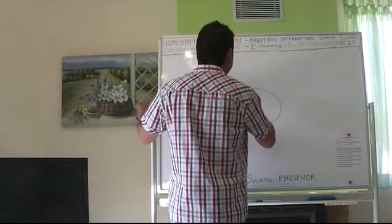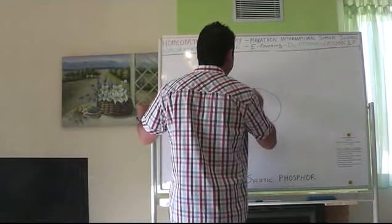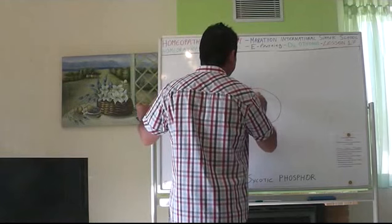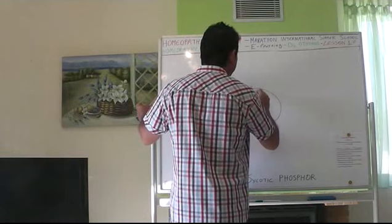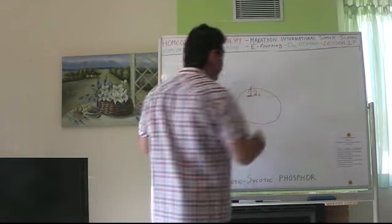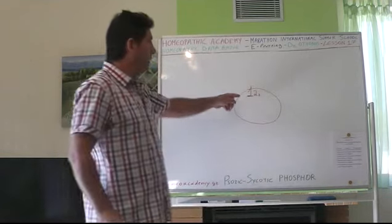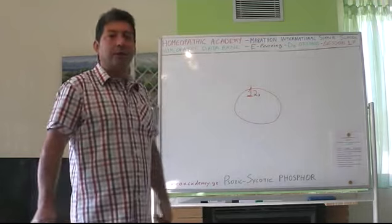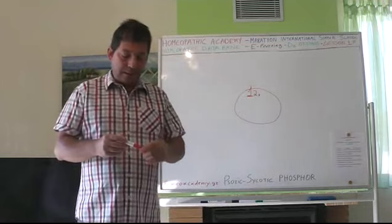He is psoric, then psychotic, and then syphilitic. Mostly psoric but also psychotic. Phosphor is psoric when it comes to intention, ideology, and ideas. Yet is psychotic when it comes to expression.